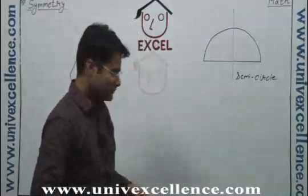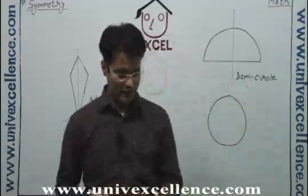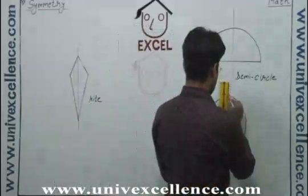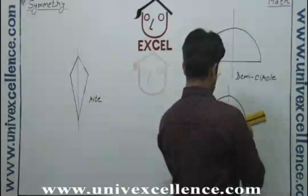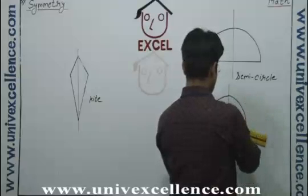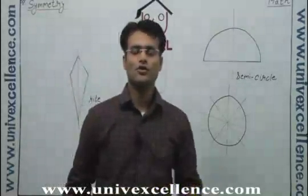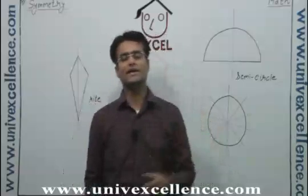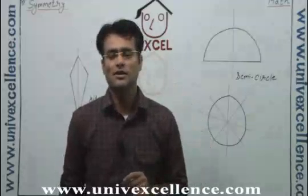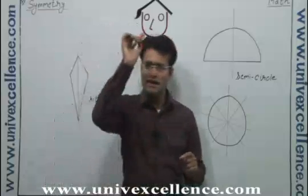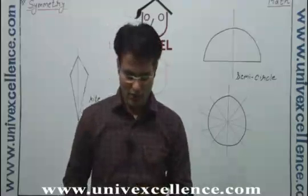If you draw a circle and you want to draw the line of symmetry, this line will give you the same thing, this line will give you the same, this one also, this one also — again the same shapes. You are making lines of symmetry and getting identical shapes again and again. So for a circle we can say there are infinite lines of symmetry. Any line you draw through the center will make a line of symmetry.